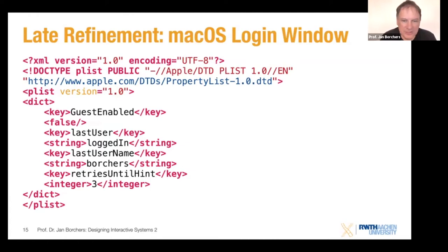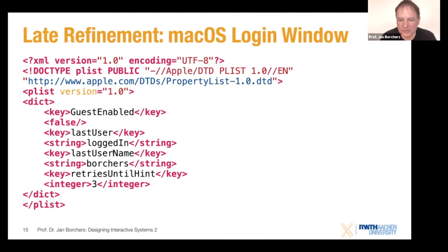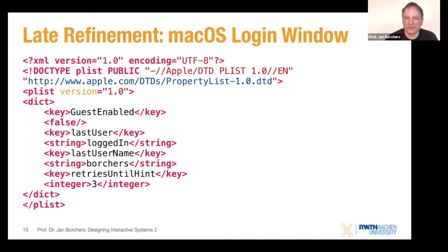If you want to tweak this, you could write a script as a system administrator responsible for networked computers — for example, to always set the last username shown to the administrator, removing any traces of users who logged in between, or change the number of retries before a password hint appears. This opens up tools that a computer scientist has at their disposal to work with preference settings and makes it easy to use the power of late refinement.